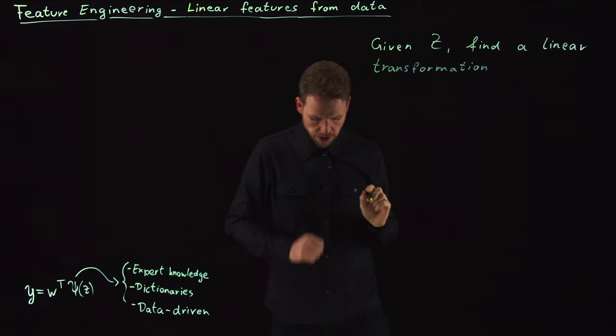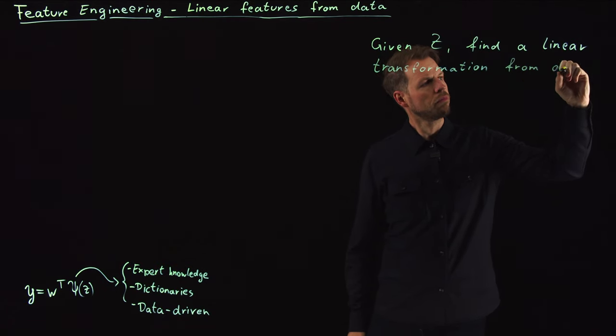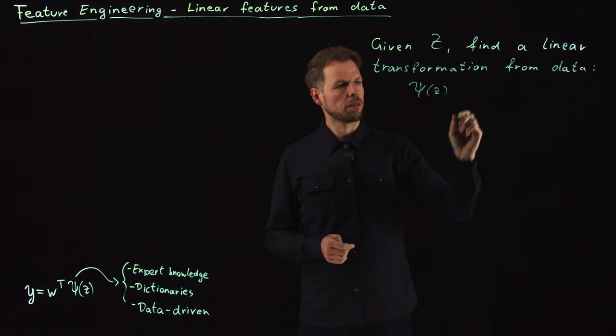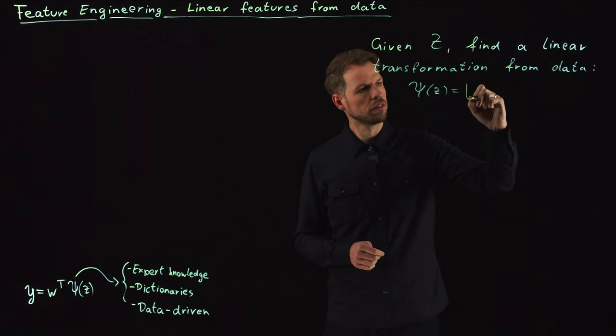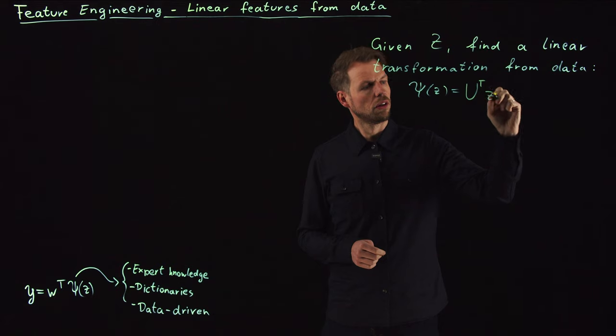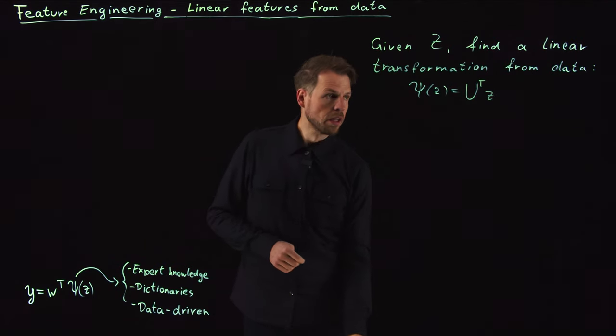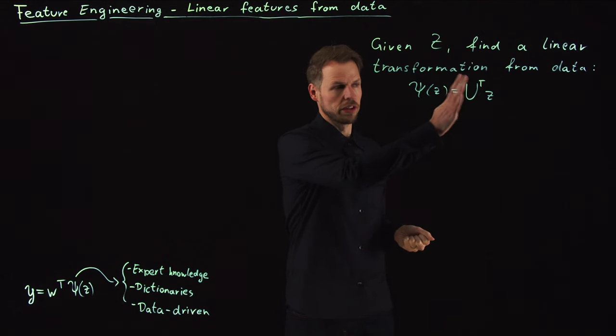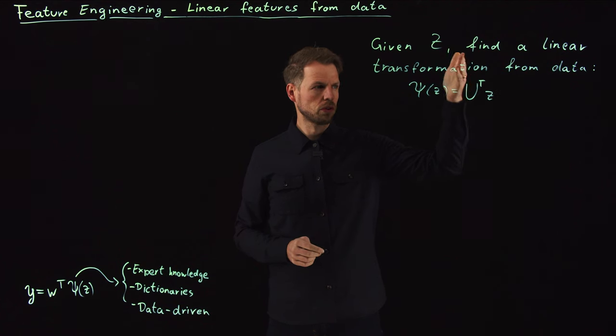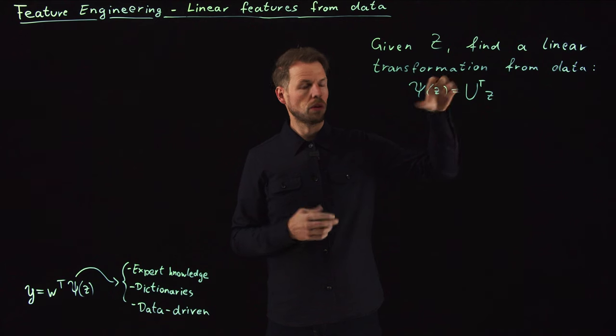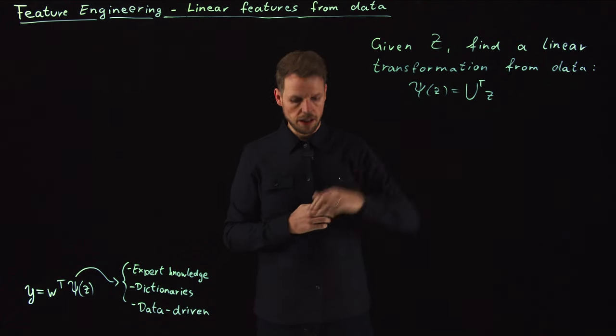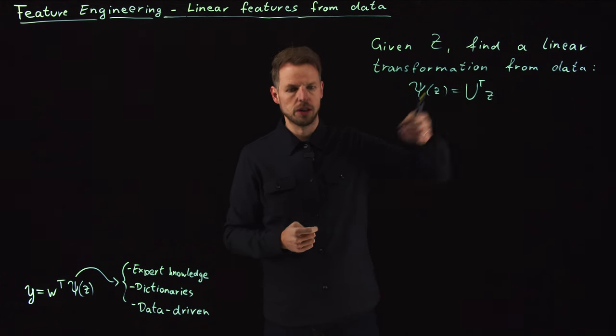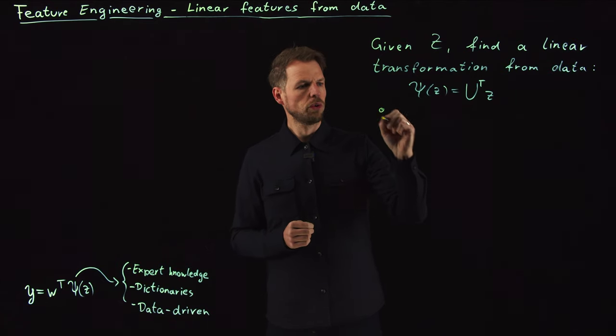What does this mean? Our psi of z becomes simply a projection on a subspace spanned by the columns of U. We take a set of linearly independent vectors which we arrange in this matrix, and then we project the input z onto these columns, onto these basis vectors. These will give us the coefficients and these are our features. Or maybe the U's are the features, but we can express the meaning or the importance of the features in our input by using this projection operation.